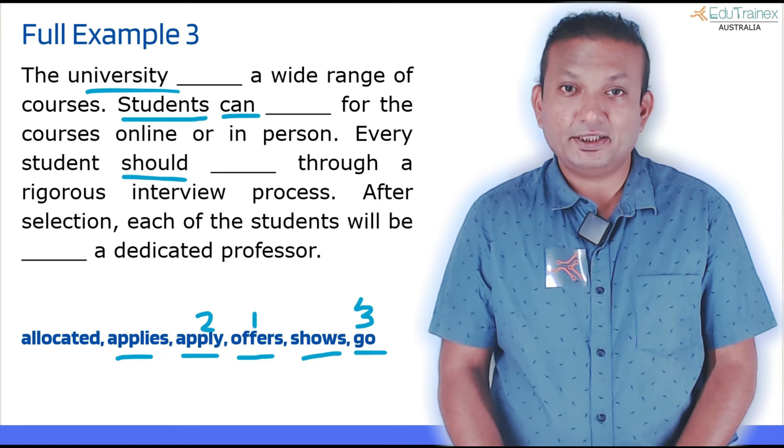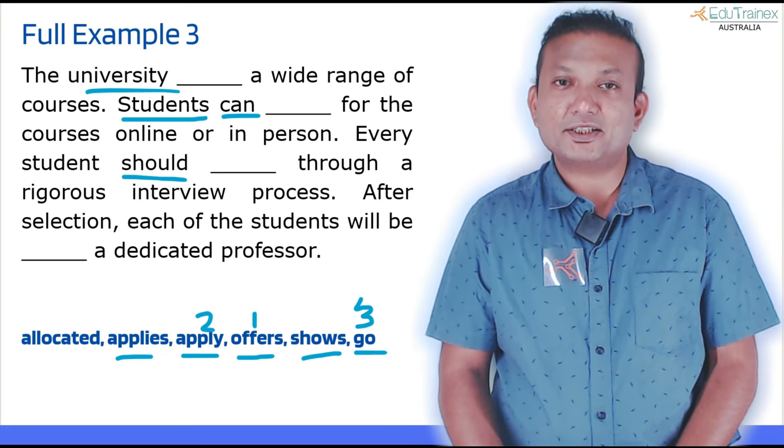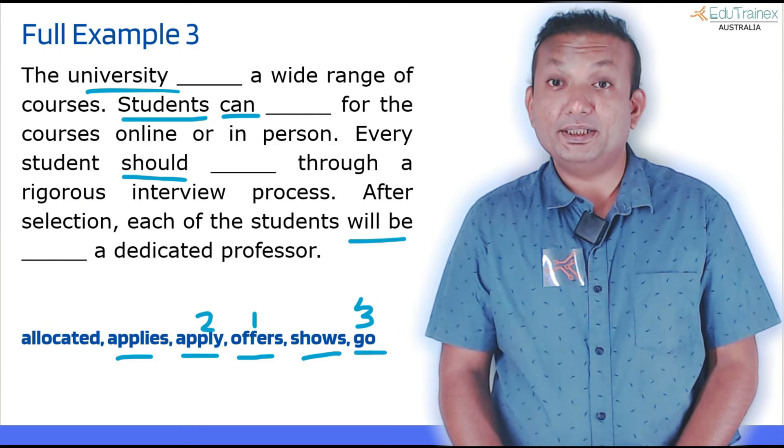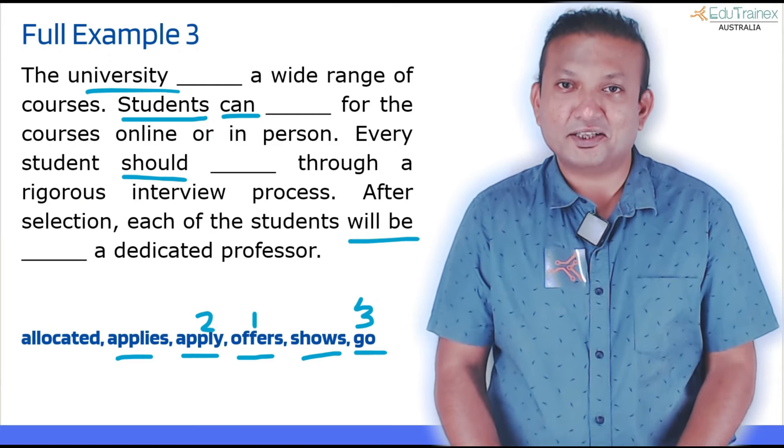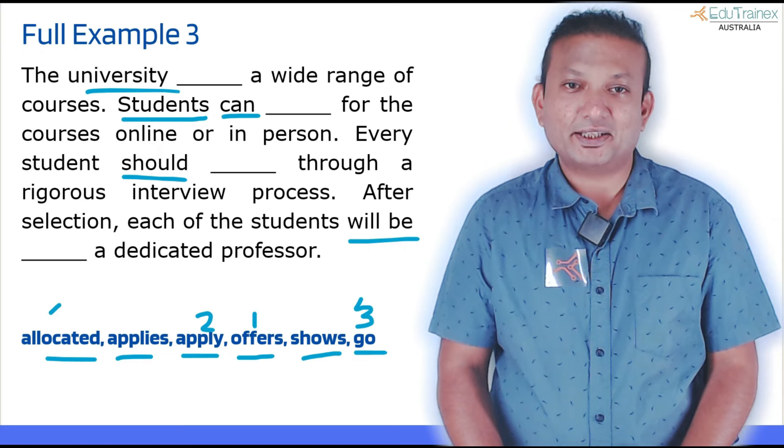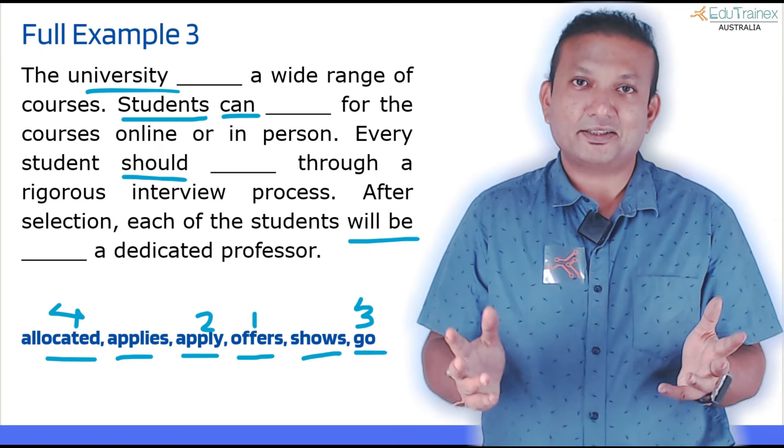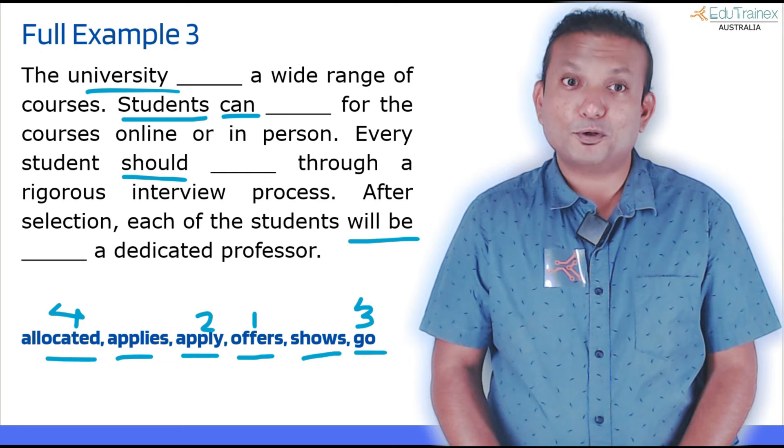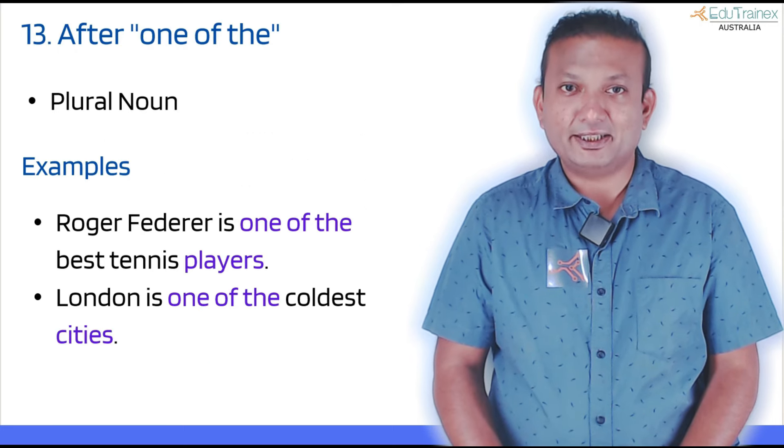Last one is 'after selection, each of the students will be blank a dedicated professor.' Will be, remember verb three, that's the answer. So 'will be allocated' is the only verb three here, so we can straight away choose this answer. And that's how you solve it. Simple, isn't it?